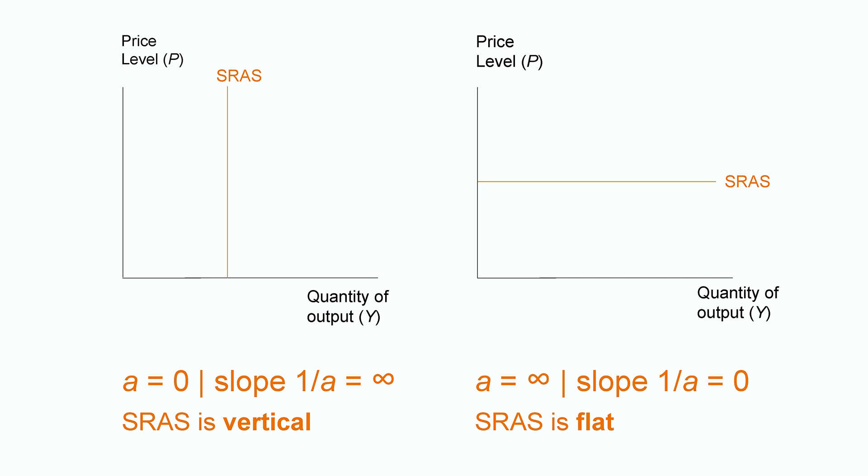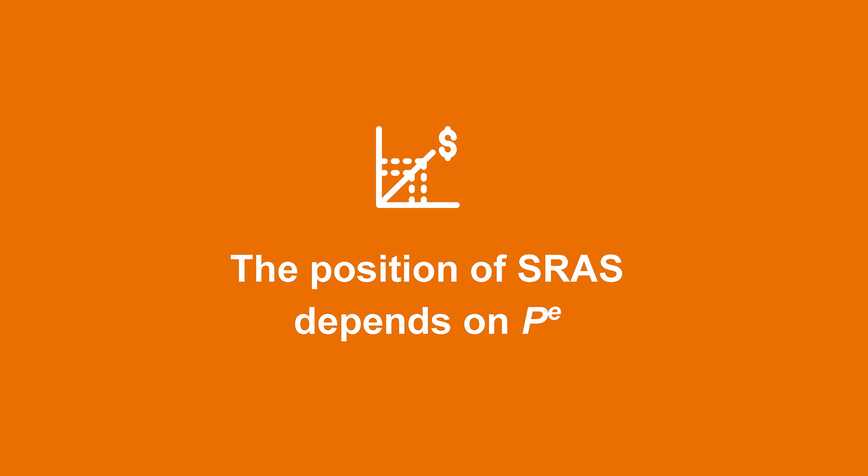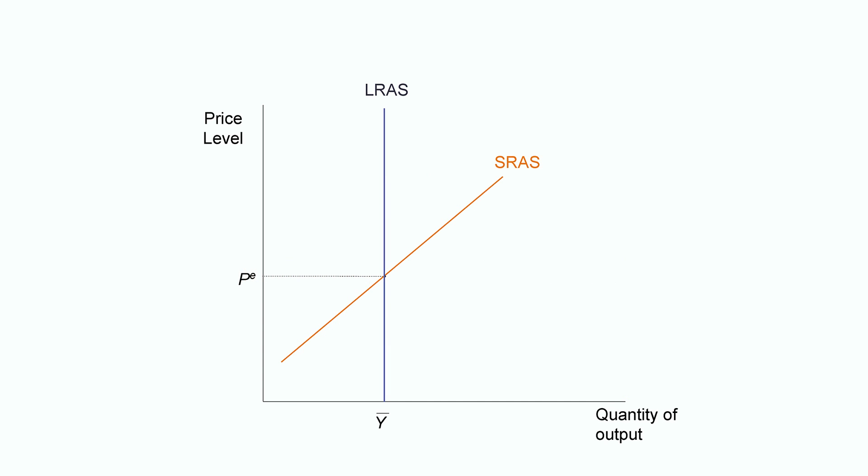Now, what other implications can we glean from the short run aggregate supply equation? We can tell from the short run aggregate supply equation that the position of short run aggregate supply depends upon PE. Let's think about this graphically first. SRAS intersects LRAS at P equals to PE. Because when Y is equal to the potential level of output Y bar, P is equal to PE.